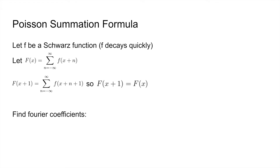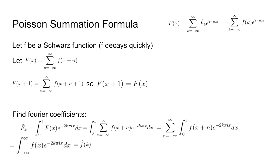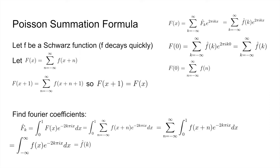Since capital F is periodic, we can find its Fourier coefficients. The k-th Fourier coefficient, capital F-hat of k, equals the integral from 0 to 1 of capital F of x times e to the negative 2 pi ikx dx. Expanding capital F of x and switching the sum and integral — since f behaves nicely — this becomes just the integral from negative infinity to infinity of f of x times e to the negative 2 pi ikx dx, which is f-hat of k by the definition of the Fourier transform. Using the Fourier series of capital F, we can write it as the sum of f-hat sub k times e to the power of 2 pi ikx. Plugging in x equals 0 gives the sum of f of n equals the sum of f-hat of k, which is the Poisson summation formula.